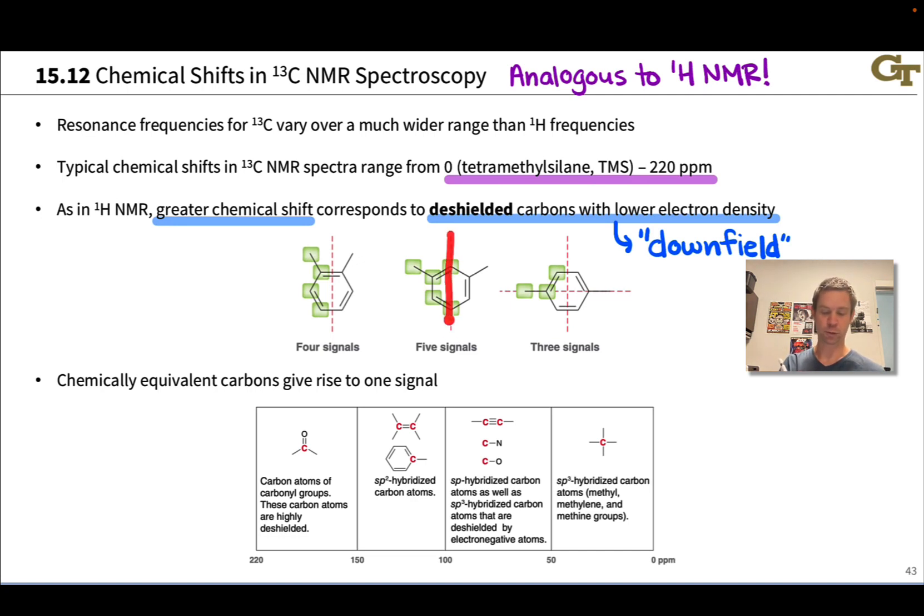For example, in this middle structure we have a plane of symmetry or an axis of rotational symmetry that's right there, and each of these carbons would give rise to a unique signal because those carbons aren't related by this axis of symmetry. For example, this one is two carbons away from the methyl, this one is right next to the methyl, this one is also two carbons away from the methyl, but on the other side of the molecule and farther away from this methyl group.